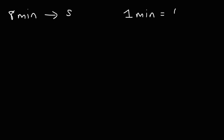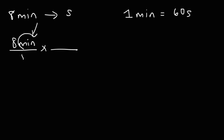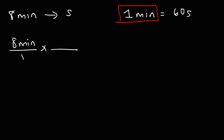1 minute is equal to 60 seconds. So now let's start with 8 minutes and convert it to seconds. Notice that the unit on the top is minutes. We need to put that same unit on the bottom. So this portion of our conversion factor is going to go on the bottom, and the other part is going to go on top — we always want to set it up so that these units cancel.